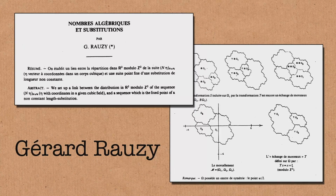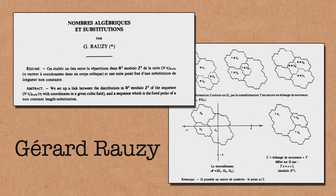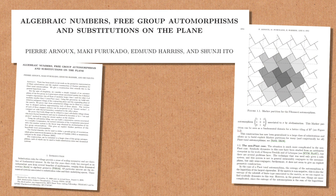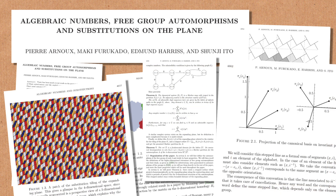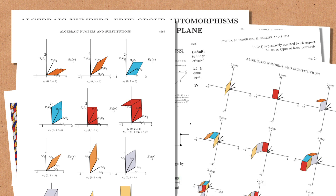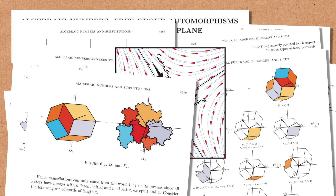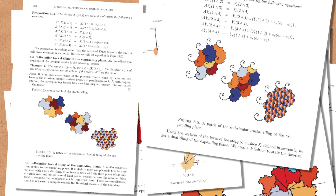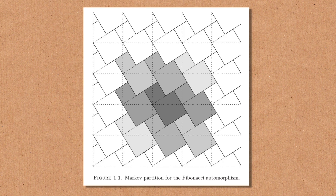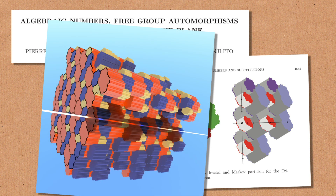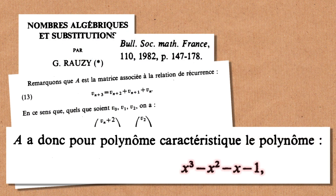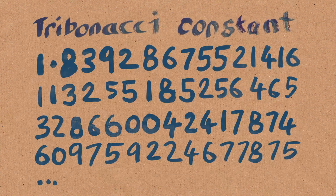This shape is called the Rauzy Fractal, and it was found by Gérard Rauzy. The interest is in studying how matrices act on three-dimensional space. There's a lot of nice theory for how certain matrices act on two-dimensional space — especially a matrix with one expansion and one contraction — giving rise to eigenvectors where everything gets squashed down and pulled out. There's a whole theory called Markov partitions which have nice periodic properties. Rauzy asked: what about the cubic case in three-dimensional space? The specific matrix being studied has as one of its eigenvalues the Tribonacci constant, and that's how it turns up in these tiles.